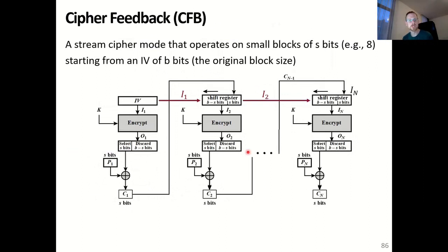The third mode is cipher feedback mode or CFB. The goal of cipher feedback mode is to convert any block cipher into a stream cipher. As a consequence, it allows working with much smaller blocks of size S — for example, S could be 8 bits — allowing you to use a block cipher to work on individual bytes just as a stream cipher. Instead of encrypting our plaintext block, which is now S bytes rather than B bytes, we encrypt an initialization vector of B bytes, where B is the block size. We encrypt this with key K, and our output is discarded except the first S bits. These S bits are XORed with our input, which is now only S bits, for example a single byte, giving us our first ciphertext block of S bits.